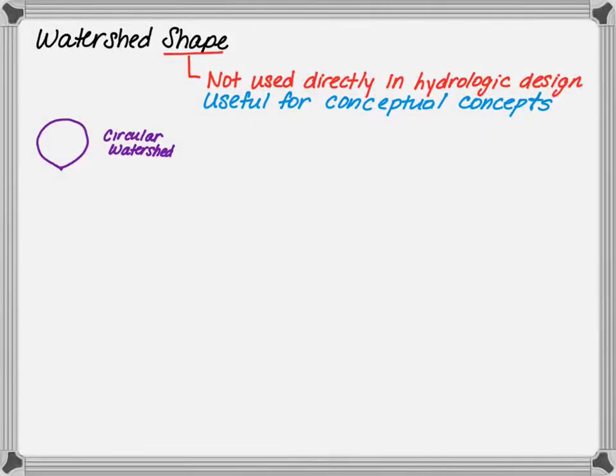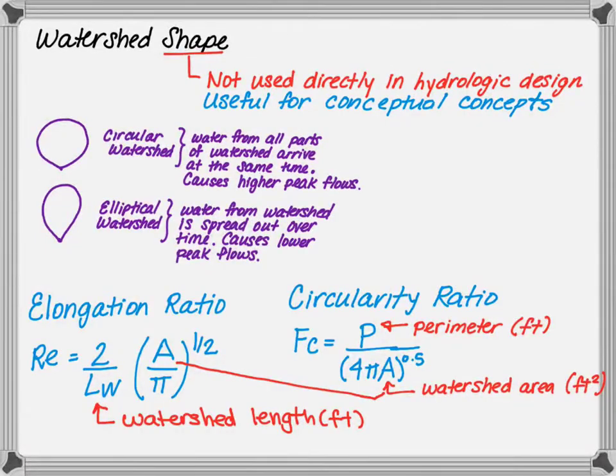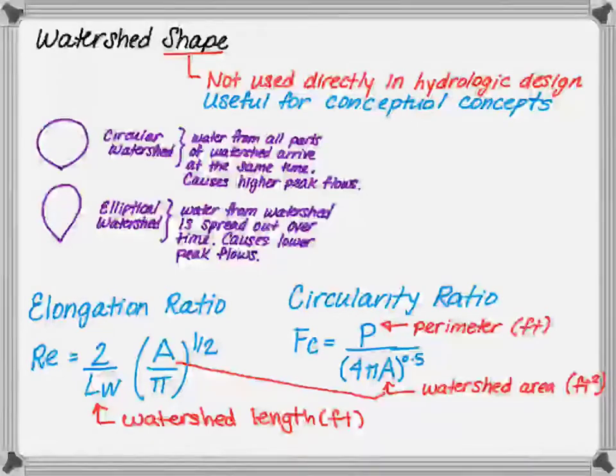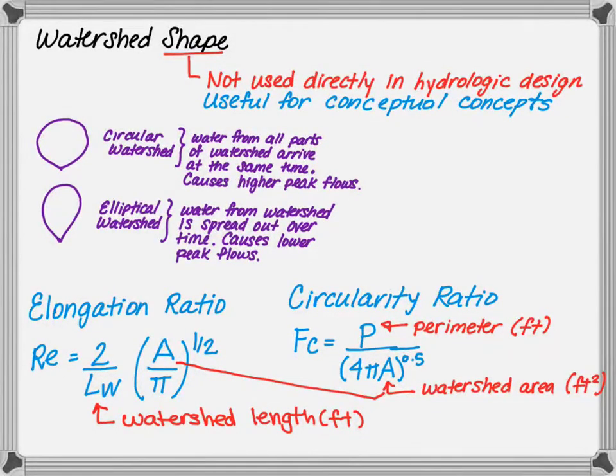One type of shape is a circular shape. A circular watershed shows that water from all parts of the watershed will arrive at approximately the same time at the outlet causing a high peak discharge. The second type of watershed is an elliptical watershed. In elliptical watersheds, the water from the watershed is more spread out over time and causes a much lower discharge. Therefore, if we can understand the shape of a watershed, we can understand the type of response that is needed.